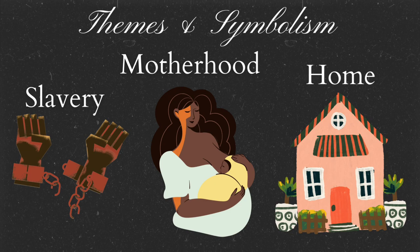Another theme noted throughout the novel is motherhood — the difficulties and trials that come with it, but also the extent of love a mother has for her child. In Sethe's case, her desperation to keep her child safe from slavery drove her to kill her baby so that it would never have to grow up and experience the cruelty which slavery brings.